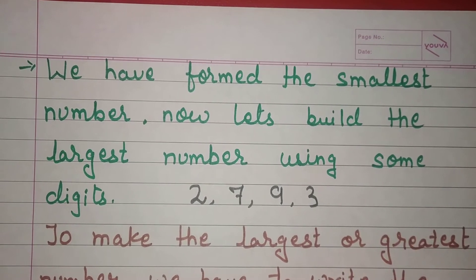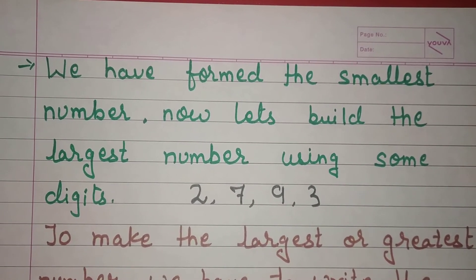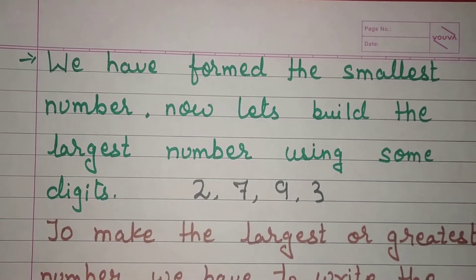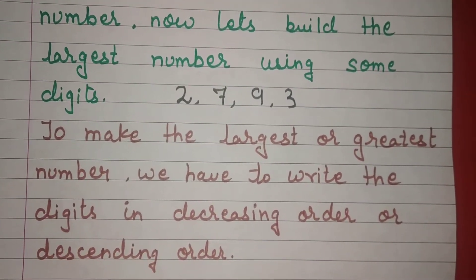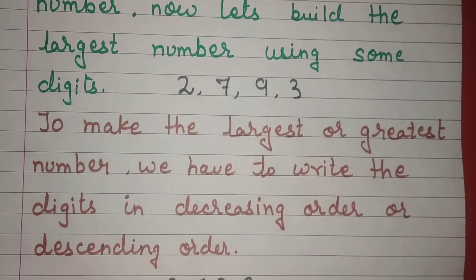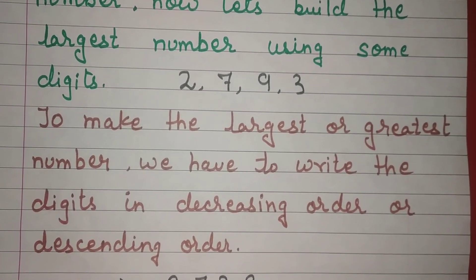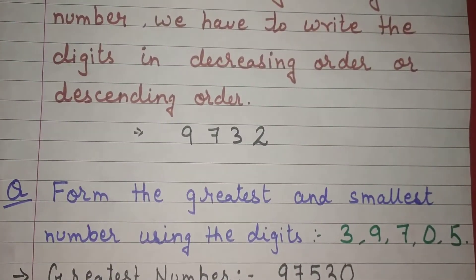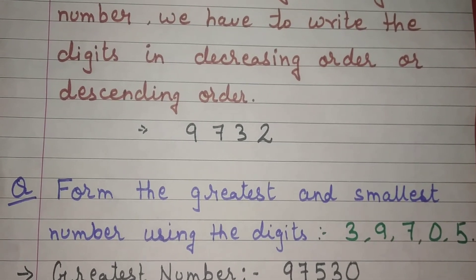We have formed the smallest number. Now let's build the largest number using the same digits — that is 2, 7, 9, 3. To make the largest or greatest number, we have to write the digits in decreasing order, or in descending order. So the largest number will be 9732.